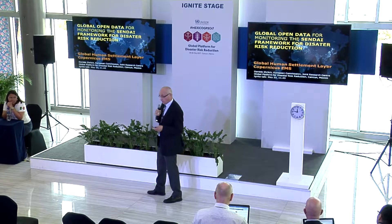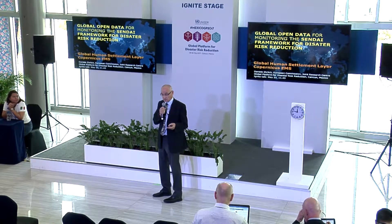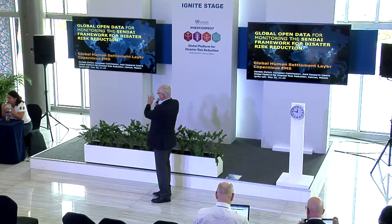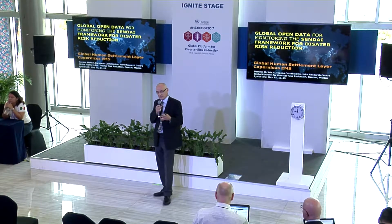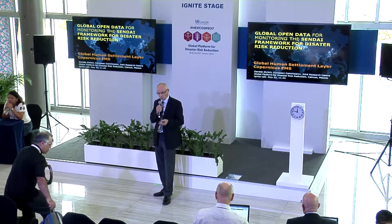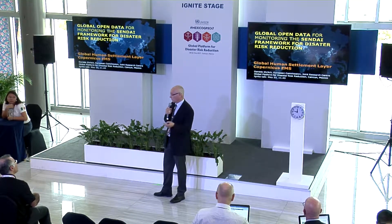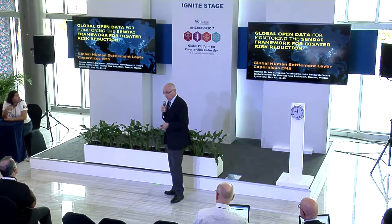Today we will talk about two types of data. The first is the Global Human Settlement Layer — that is what you see in the background here — which represents all the cities and built-up areas of the world, derived from satellite imagery. The second product is the Copernicus Emergency Mapping Service, which is a service that my organization provides to produce information on disaster losses and damages.